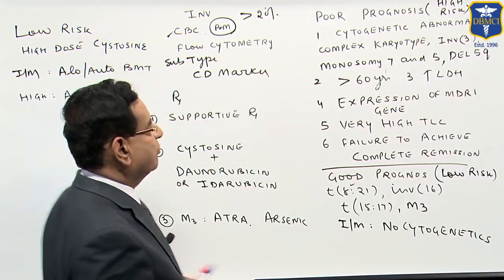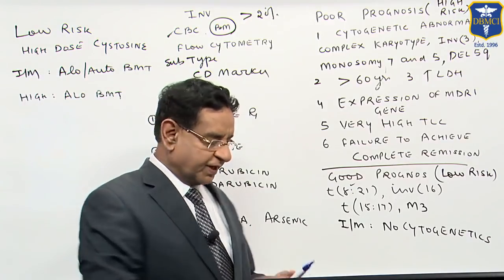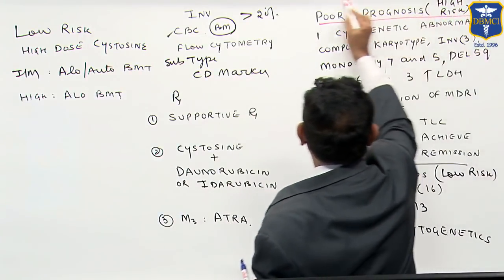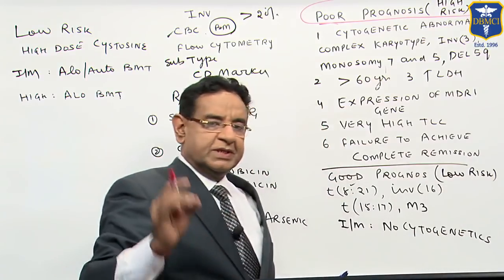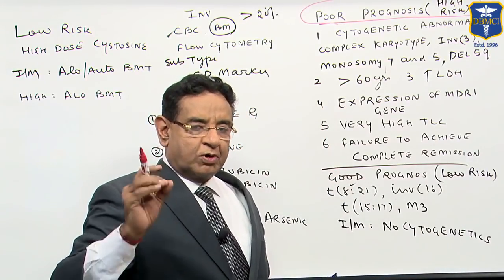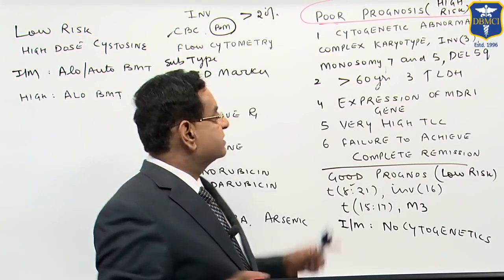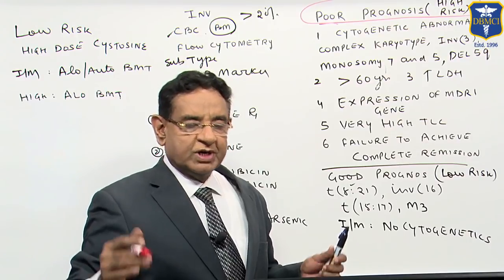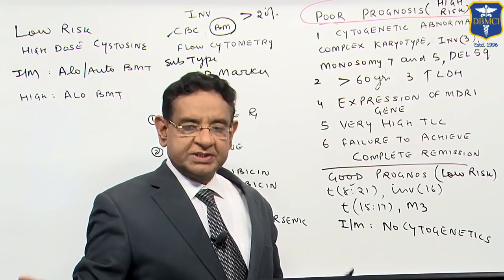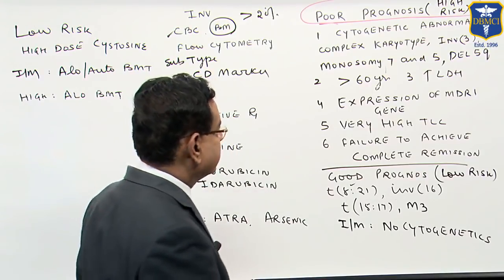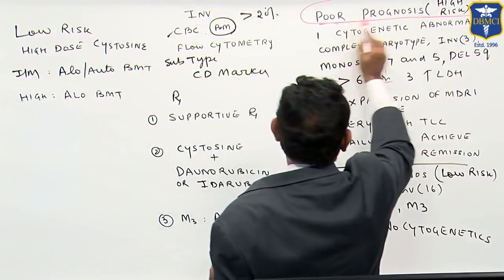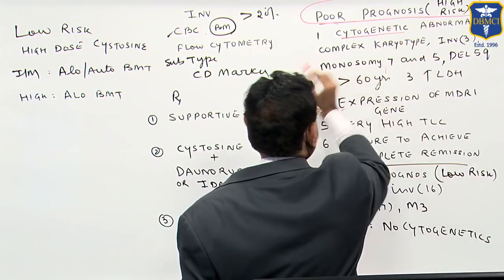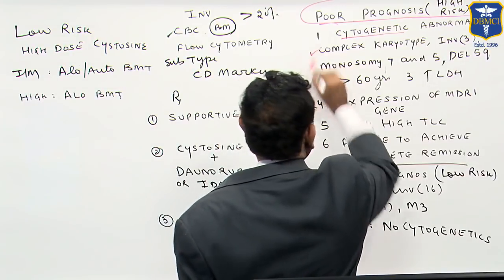Now let us look at prognostic factors. The single most important prognostic factor in AML is cytogenetic abnormalities. Let us see what are the poor, good, and intermediate risk factors with respect to cytogenetic abnormalities. Poor prognosis — so-called high-risk cases — are those with complex cytogenetic abnormalities.